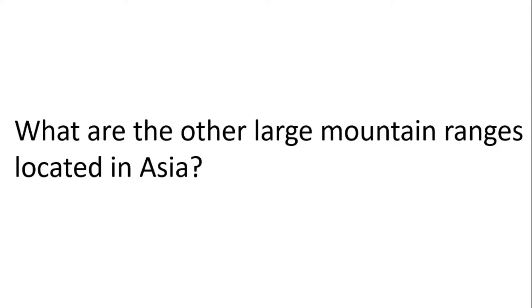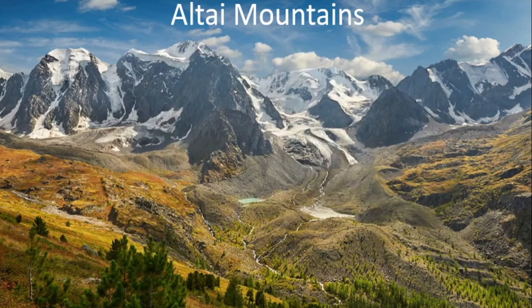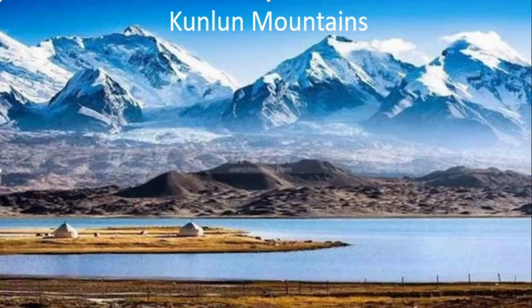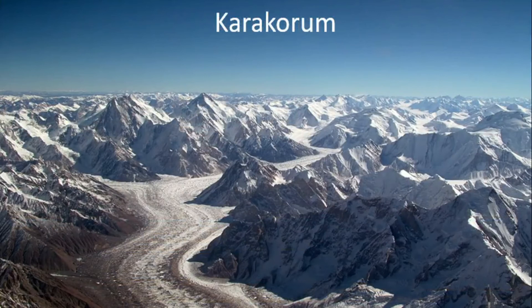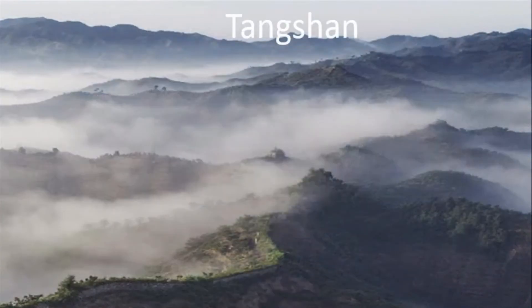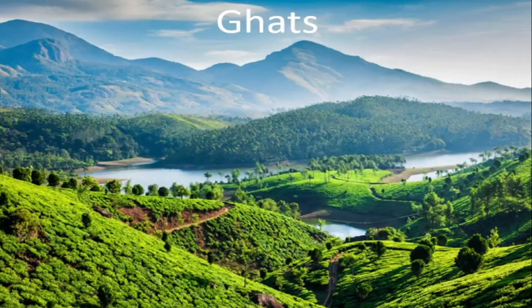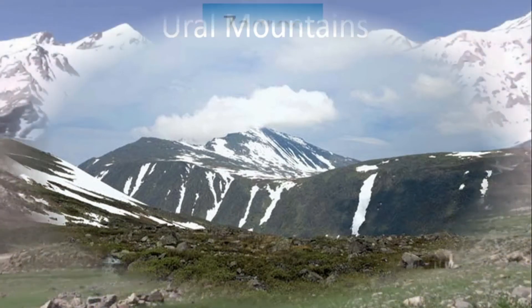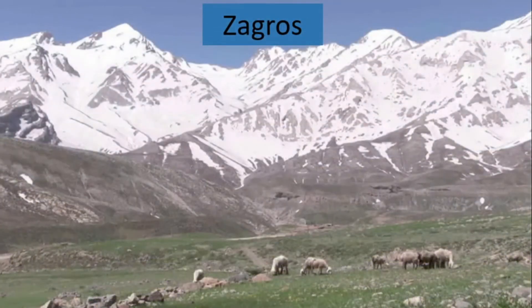Besides Himalayas, what are the other large mountain ranges located in Asia? Altai Mountains, Kunlun Mountains, Karakoram, Tian Shan, Ghats, Ural Mountains and Zagros. That's all for some large mountain ranges located in Asia.